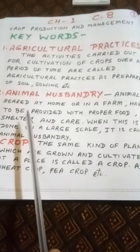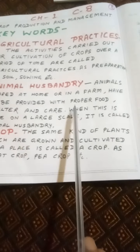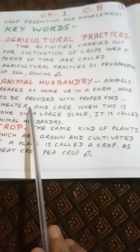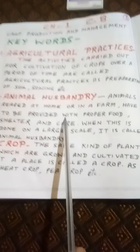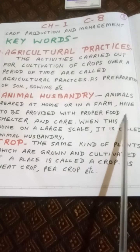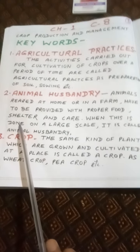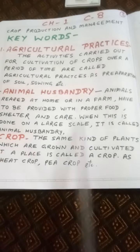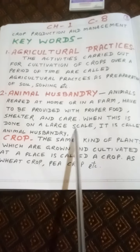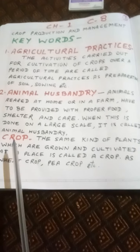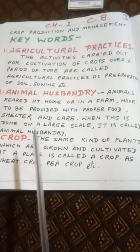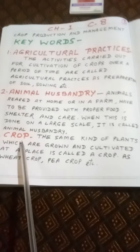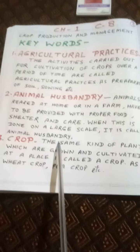Keyword 2: Animal Husbandry. Animals reared at home or on a farm have to be provided with proper food, shelter, and care. When this is done on a large scale, it is called animal husbandry.